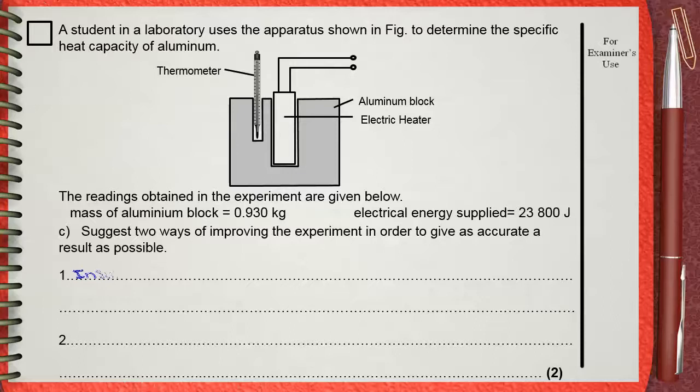Let's say, insulate the block number one. Fill the gap between the heater and the block with some oil.